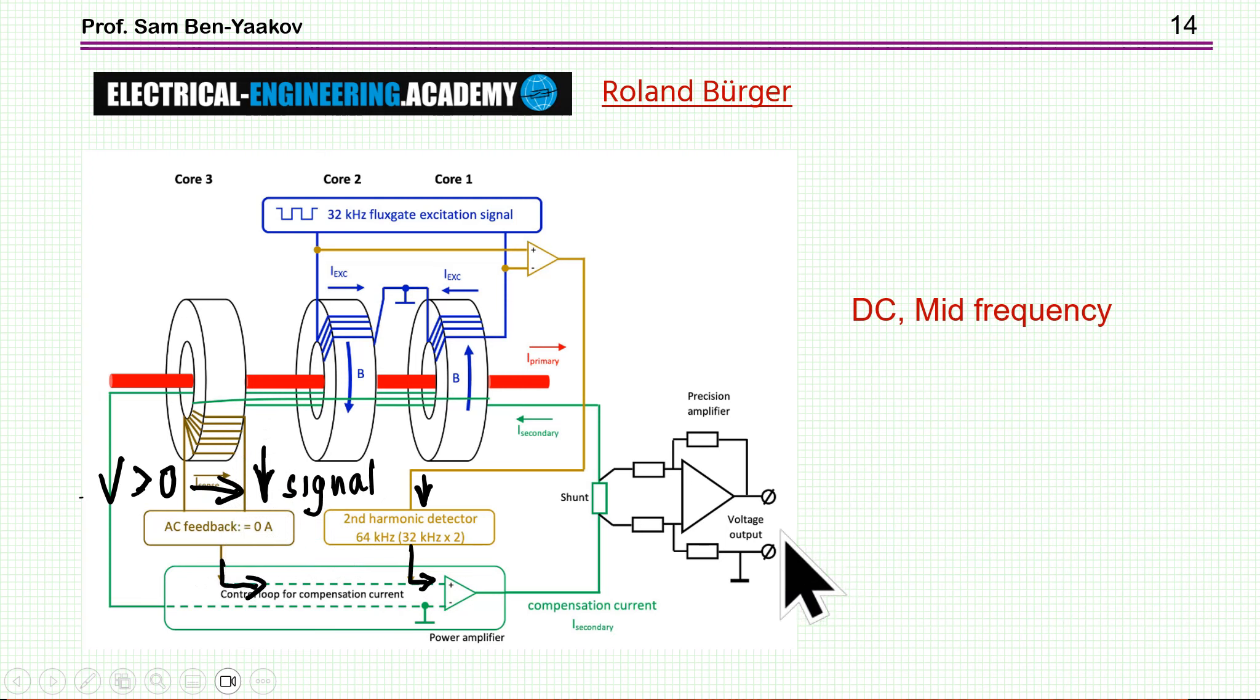However, as we increase the frequency, or if we measure a higher frequency, then we start seeing here a signal. Now this signal is being added to the low frequency signal which is coming from here. So it contributes to the feedback, such that the current now is also reflecting the higher frequency. So therefore we have better performance for this mid frequency, both for the DC component if there is any, and the medium frequency that might be here in the measured current.